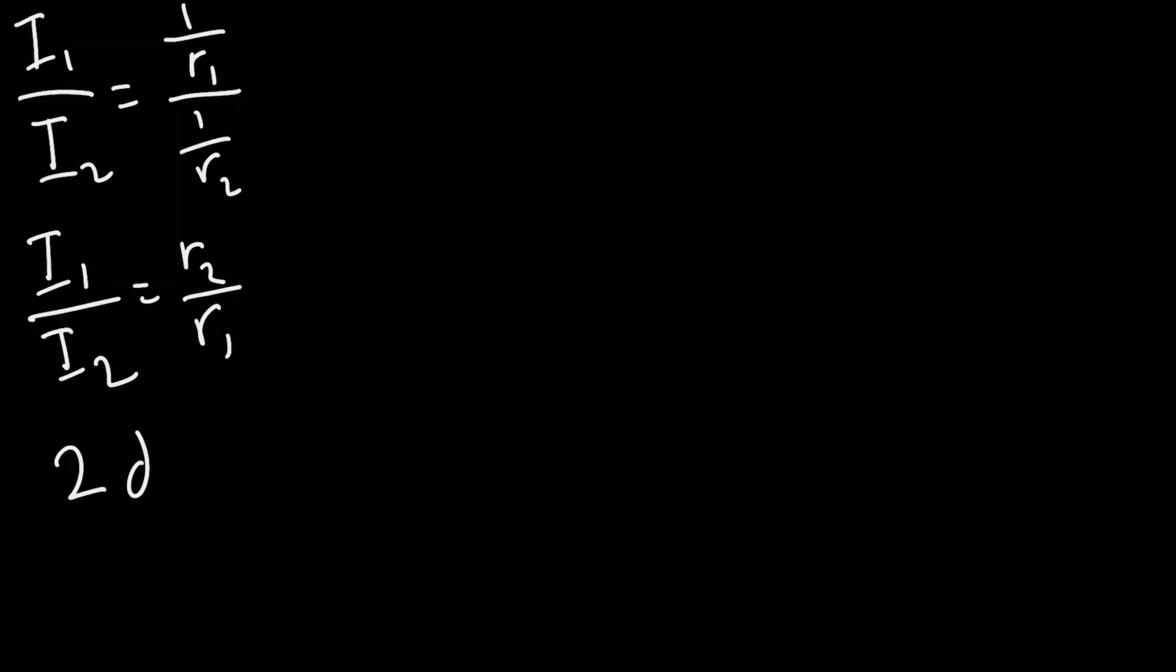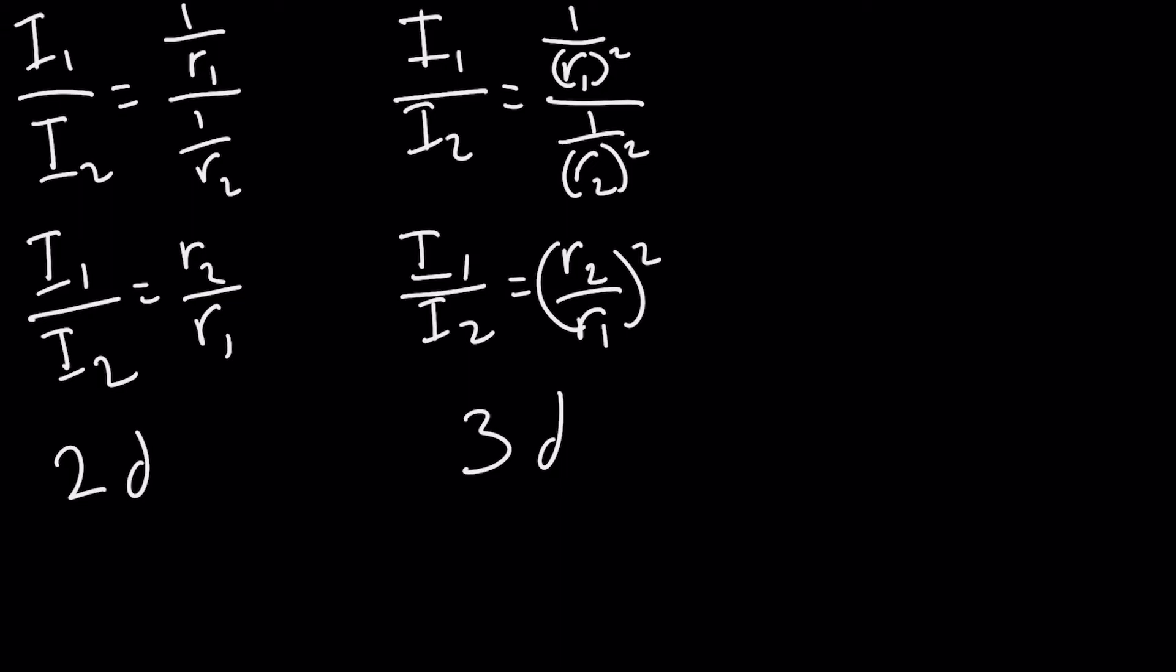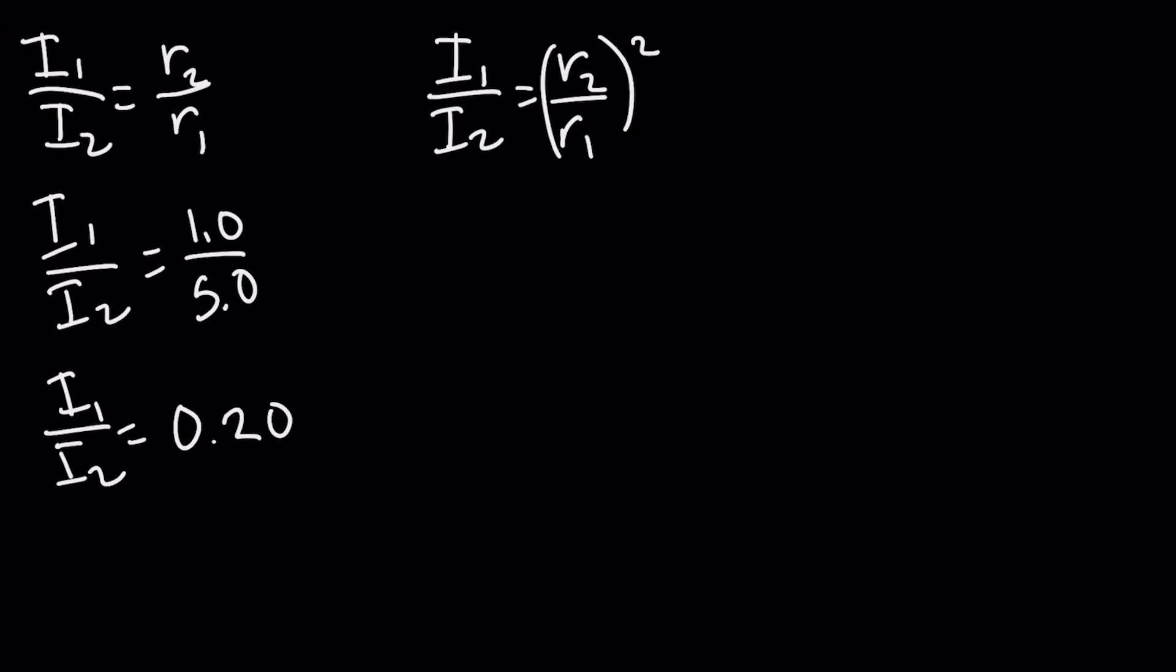So our proportion becomes I₁/I₂ equals 1 over r₁² over 1 over r₂², leaving us with I₁/I₂ equals (r₂/r₁)². Again, it's as simple as plugging our numbers for r₁ and r₂ as we did before and then squaring that value, leaving us with a ratio of 0.040.